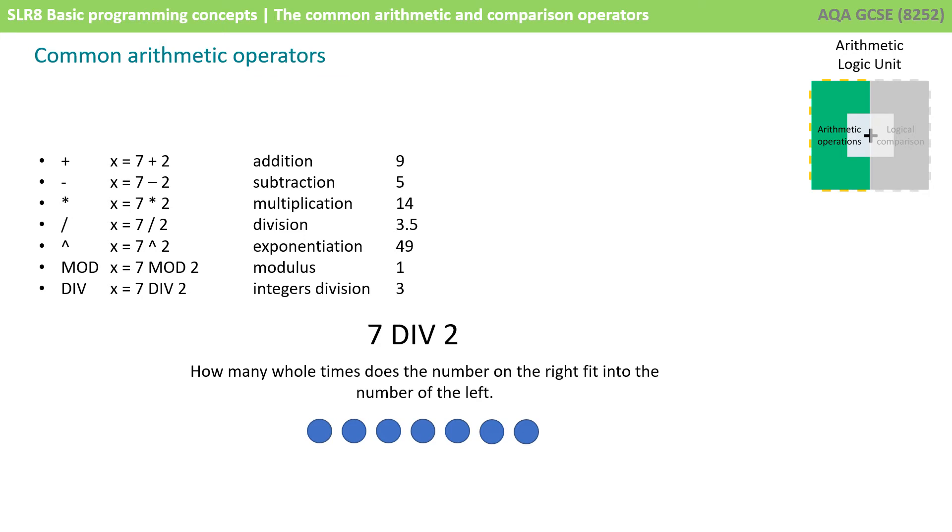In conjunction with modulus is what's called integer division. In your exam, you'll see it as the div command, although it's shown differently in other languages. This is how many whole times does the number on the right fit into the number on the left. As we can see from the previous example, the number on the right, 2, fits 3 whole times into the number on the left. So, 7 div 2 is 3.